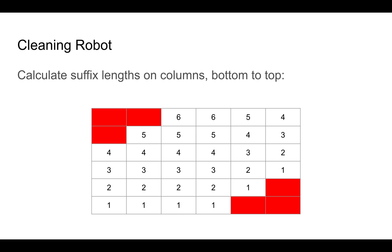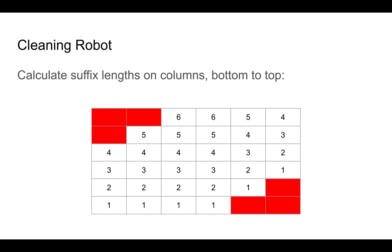Using these two values, we can then iteratively calculate the largest square that's going to fit. And again, we do this in reverse order from bottom to top, from right to left. And the size of the largest square that fits in any particular unit square is how many squares we can go to the right without hitting an obstruction, or how many squares we can go down without hitting an obstruction, or one plus the greatest square that fits in the square that is to our southwest. If we take the minimum of these three values, that is the largest square we can fit, started in this location. We'll refer to this value as the unit square's label.